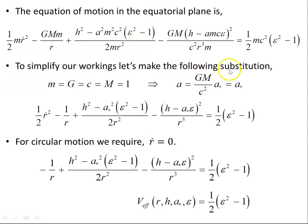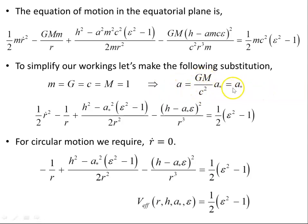To simplify our workings we'll make the following substitution: we'll set all our constants m, G, c, and big M to one. So A equals GM over c squared times the dimensionless spin parameter A-star, which since GM and c are all one, reduces to just A-star. The spin parameter simply becomes the dimensionless spin parameter. Here's our energy equation or equation of motion again in this new system with constants set to one.